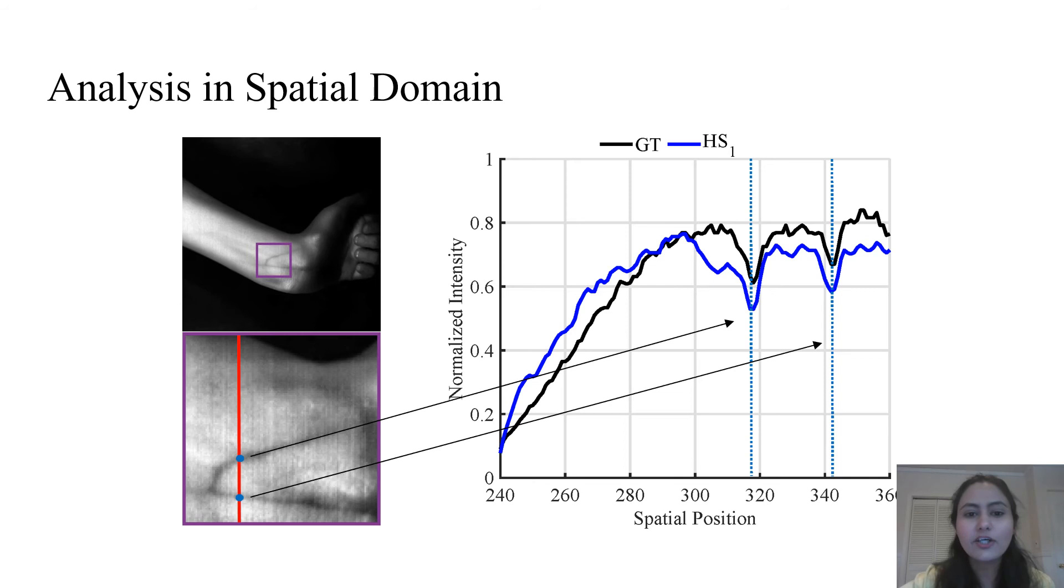For further validation of the accuracy of the proposed results, the recovered intensities corresponding to veins and normal skin are analyzed in the spatial domain. We compare the recovered intensities of the reconstructed band with the ground truth as shown here. The intensities are plotted against a chosen spatial position marked by the red line in the left image. The intensity values reconstructed by the HS1 model are compared against the ground truth. The positions of the localized veins marked by blue dot in the left image corresponds to the vertical blue dotted lines on the plot. The curves plotted in the right part of the figure indicate that the recovered intensities are near to the ground truth, which shows the accuracy of our reconstruction method for vein visualization.